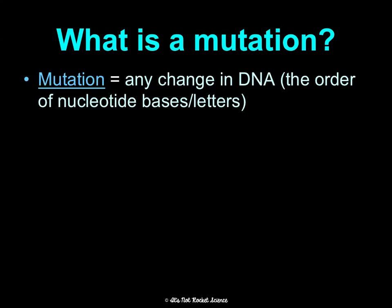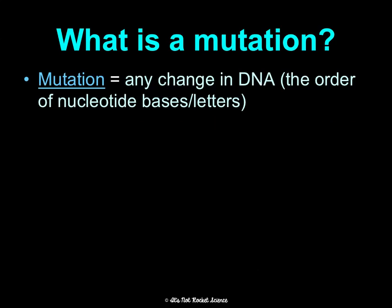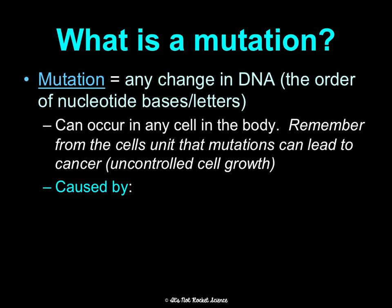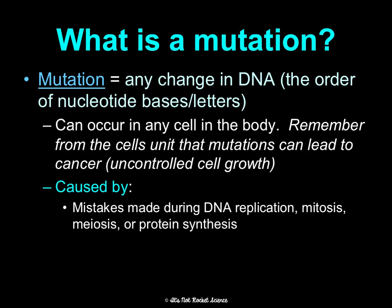So first, what is a mutation? A mutation is any change in DNA — the order of the nucleotide bases, meaning the letters — any change at all. It can occur in any cell in the body, and remember from the cells unit that mutations can lead to cancer, which is uncontrolled cell growth. Mutations can be caused by mistakes during replication, mitosis, meiosis, or protein synthesis.